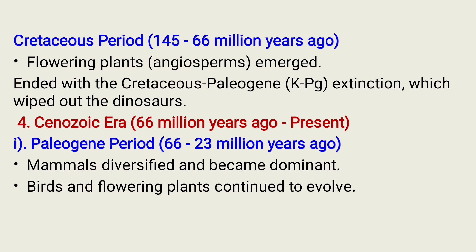The fourth and most recent era is the Cenozoic Era, known from 66 million years ago to the present. The Paleogene Period is classified into different epochs. One is the Paleocene, commonly known between 66 million up to 23 million years ago. During this time, mammals diversified and became dominant, and birds and flowering plants continued to evolve.